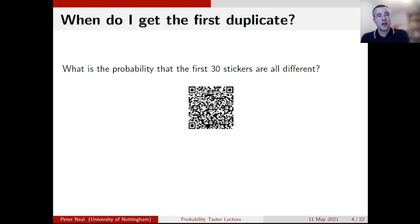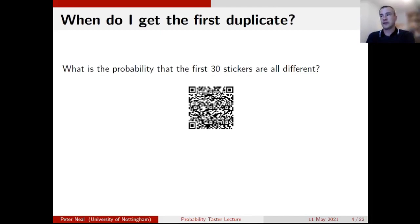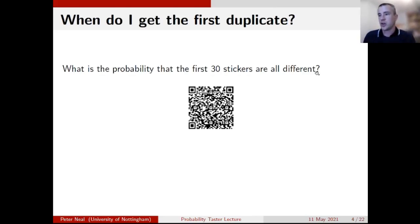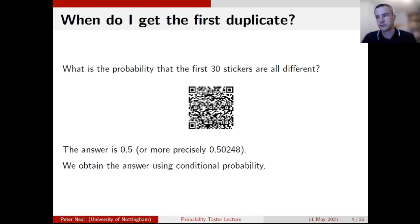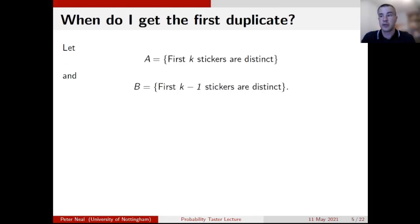I've got no votes for 0.5 or 0.95, and my leader at the moment is 0.75 with four votes. This is really quite reassuring for me that I can teach you something — nobody has come up with the correct answer, which is 0.5, or more precisely 0.50248. What I want to look at is how we get to this answer, and to do that we're going to use conditional probability.